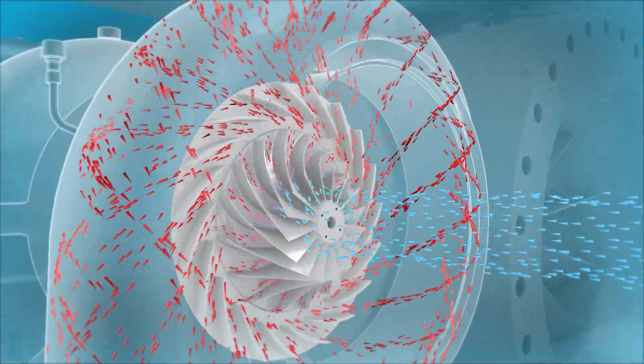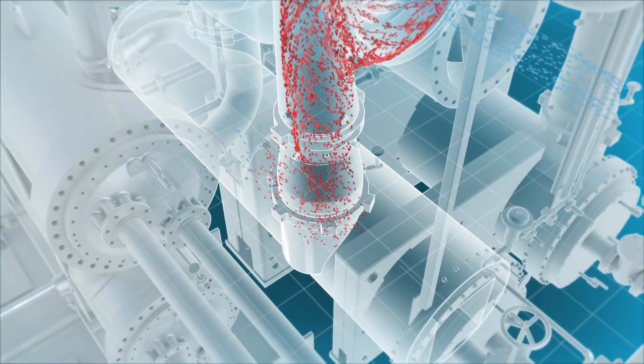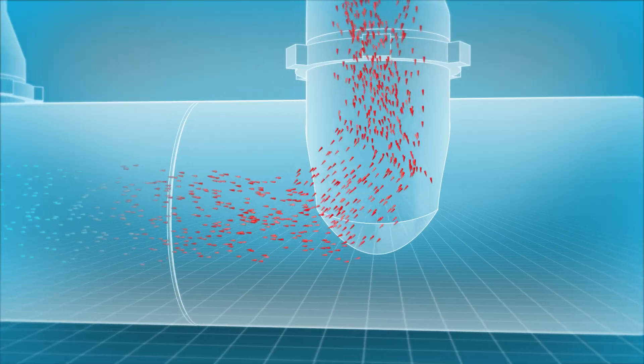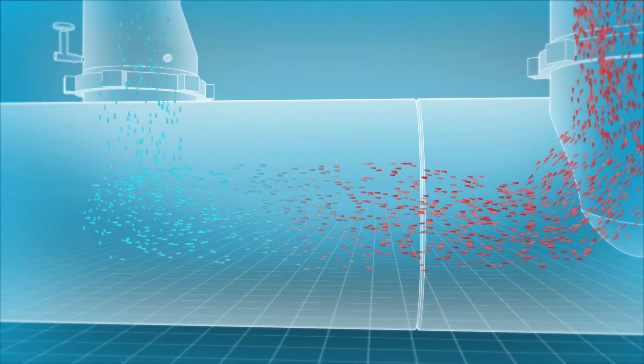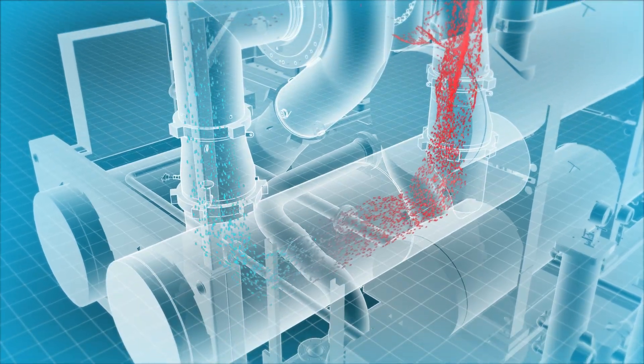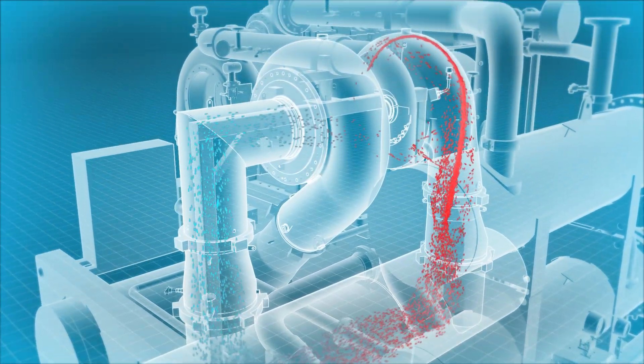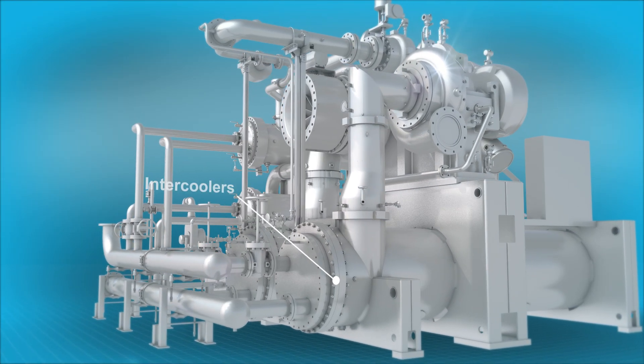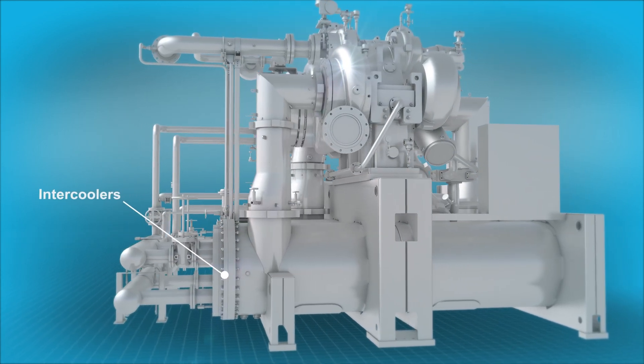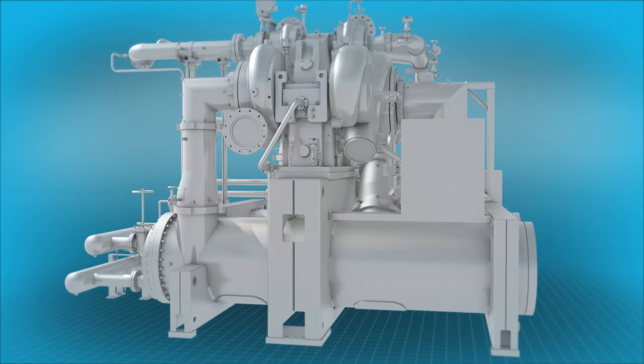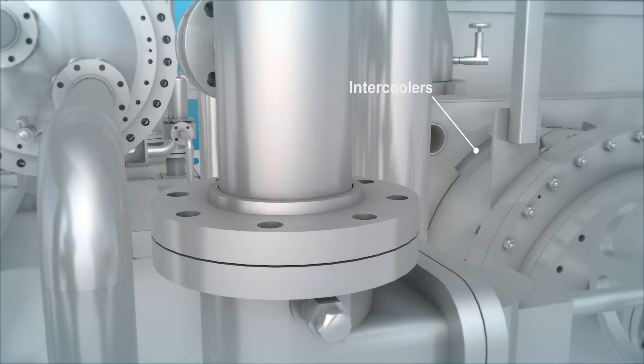Gas temperature rises during the compression process. To improve compression efficiency, interstage cooling can be easily accommodated between any of the compressor stages. Atlas Copco offers a range of intercoolers that are precisely matched to process requirements and meet all relevant international standards.